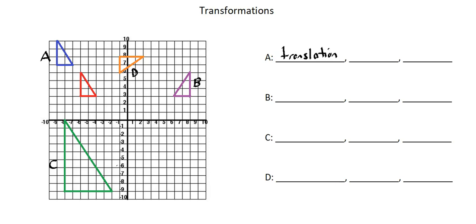Now once I know I'm working with a translation, I know that there are only two components to my description. All I need to identify is the translation unit vector. I can identify the vector by evaluating one point in the object relative to the corresponding point in the image. Looking at the bottom left vertex, it's a move left of three and a move up of four. So the translation vector is negative three, four.